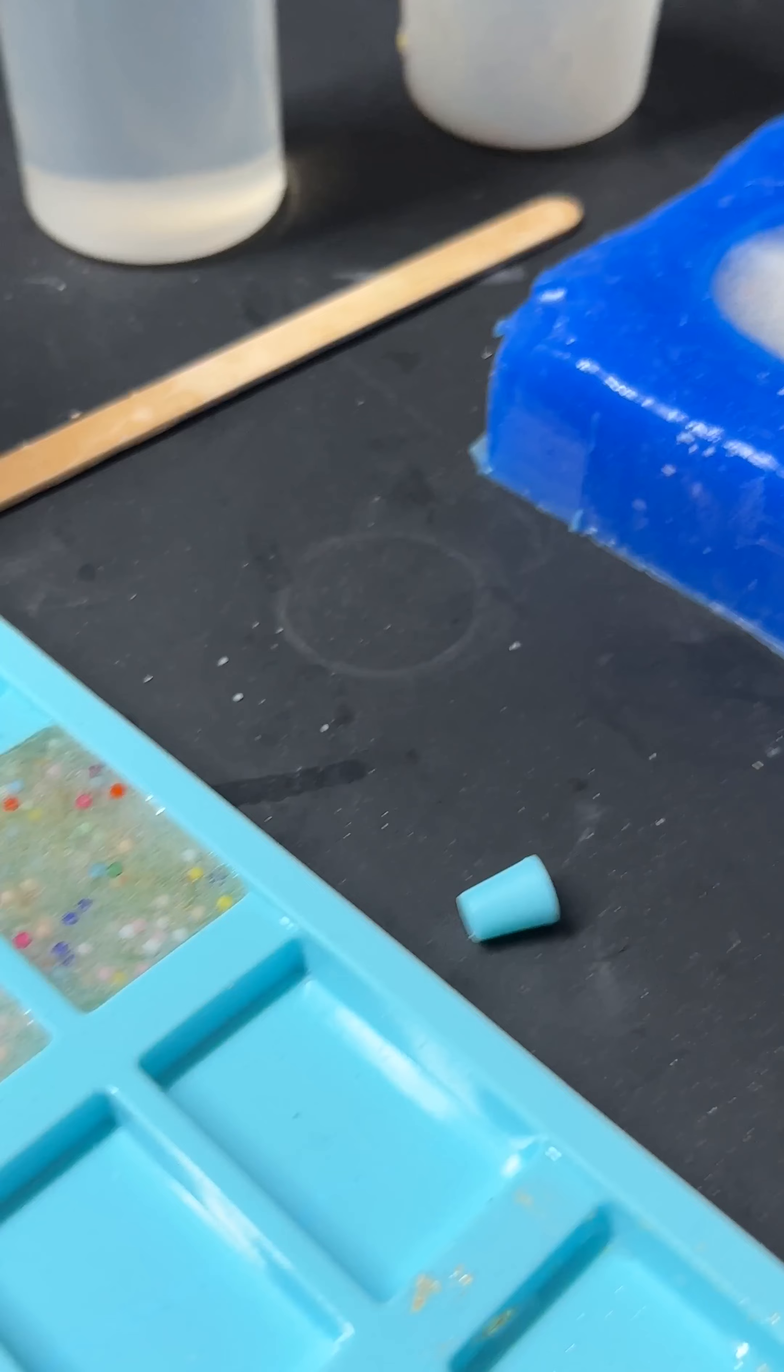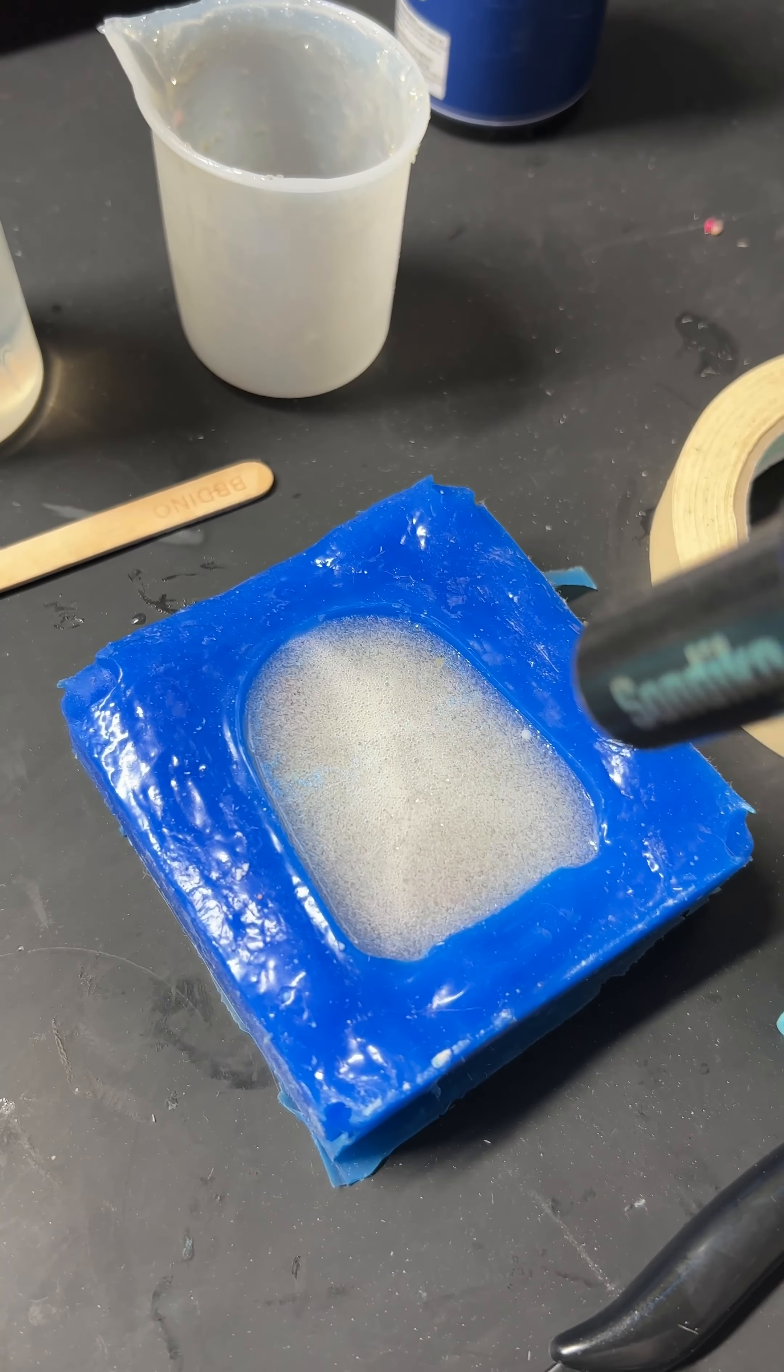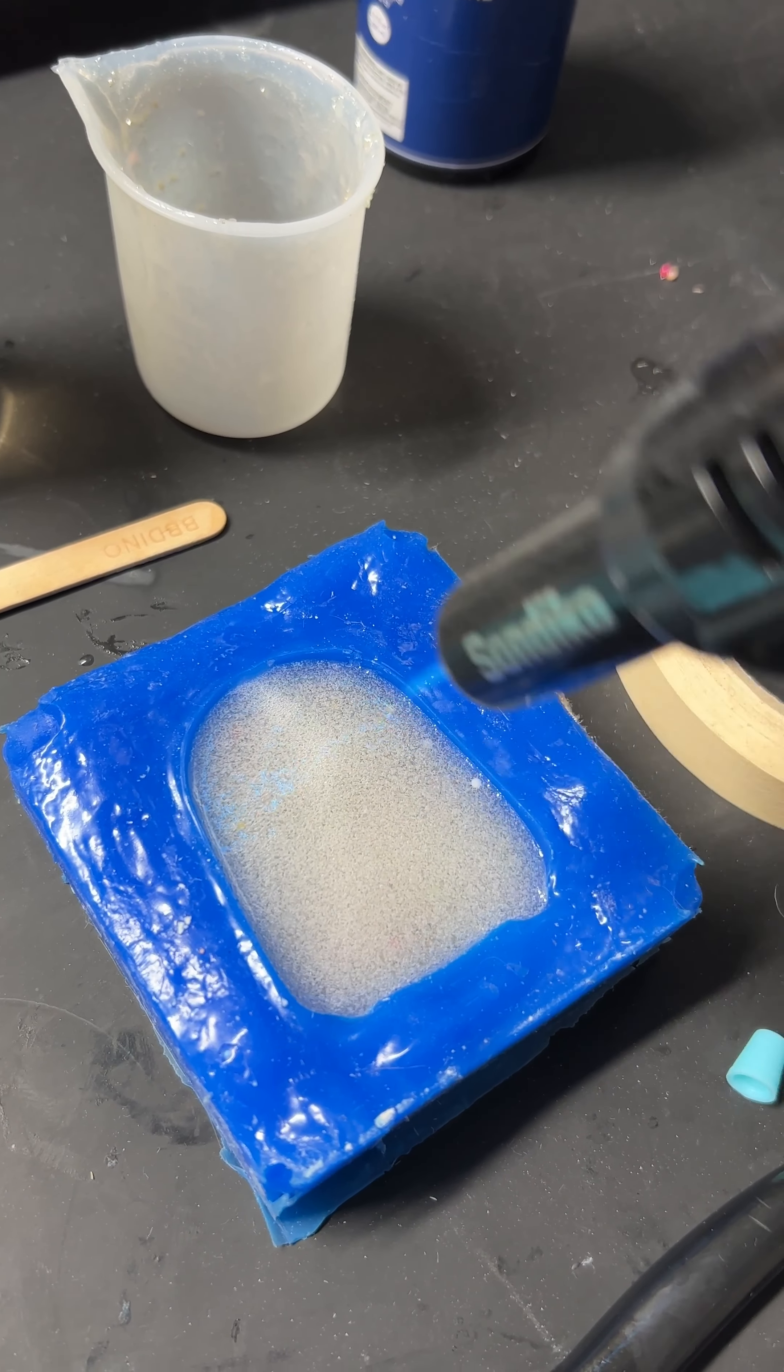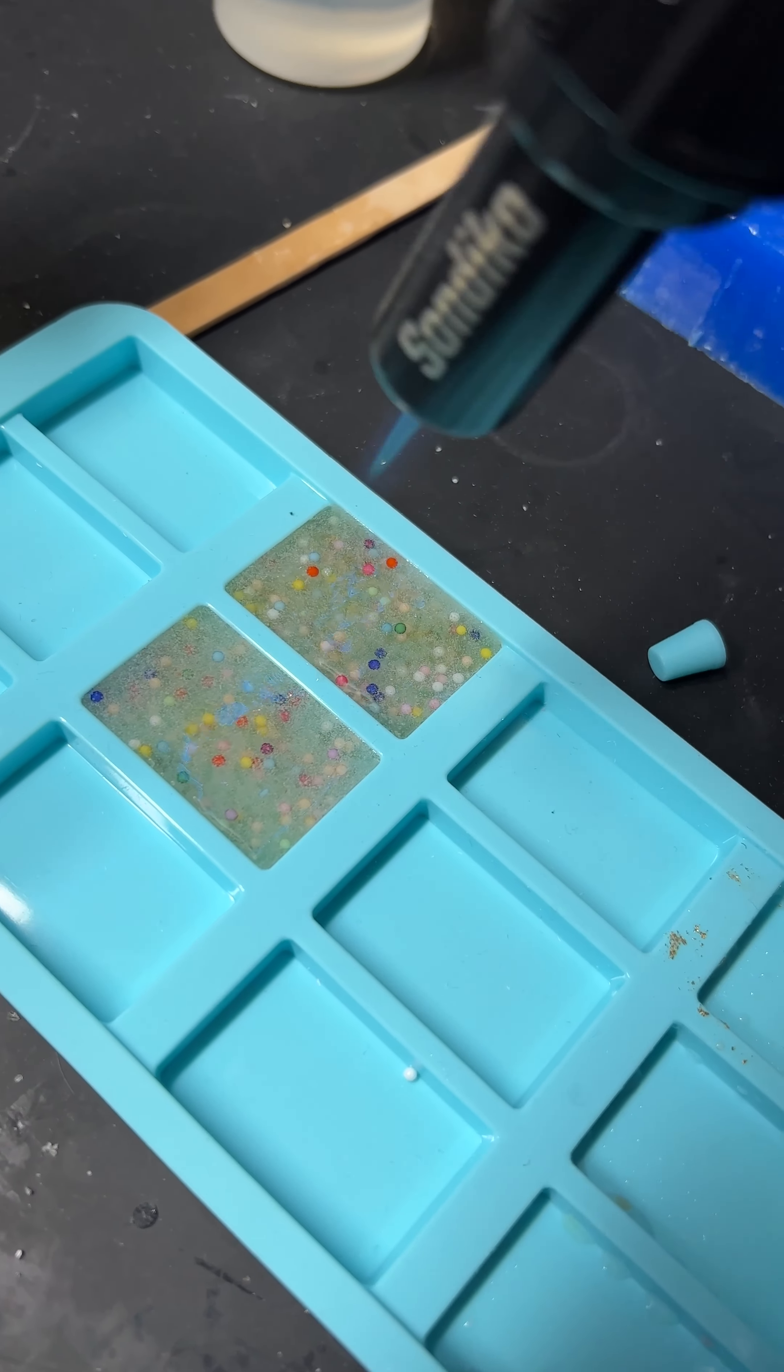I'm not even sure if this is going to work, because it's made for tables. The bottle says use a butane torch to torch the bubbles out. The instruction says wait 72 hours for it to fully harden it.